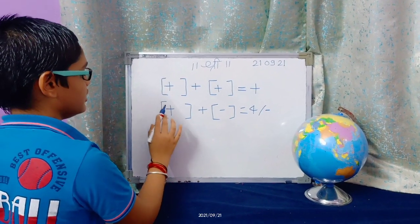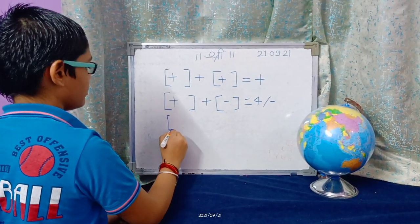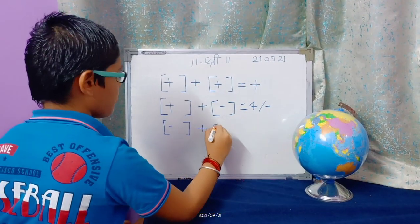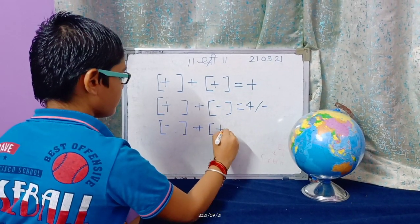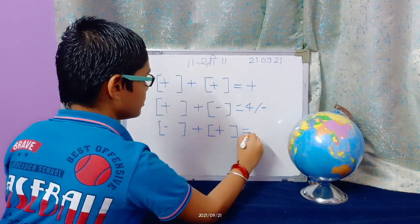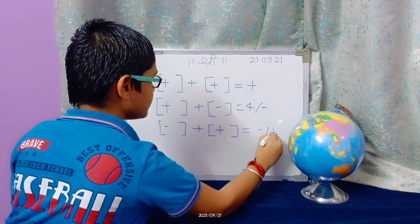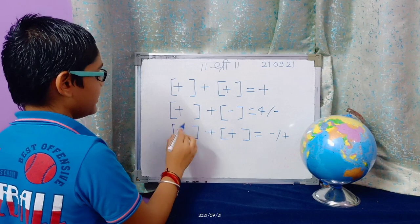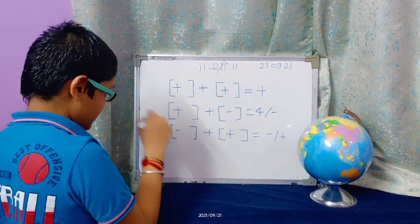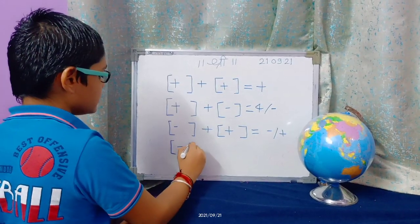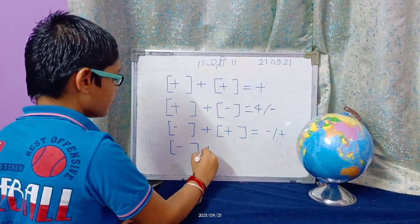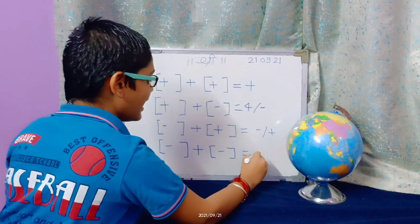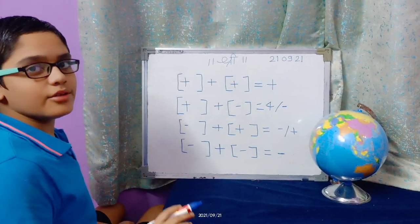Then minus plus plus equals minus or plus. It also depends on the greater number. Then last is minus plus minus equals minus only. So now I will give you some examples.